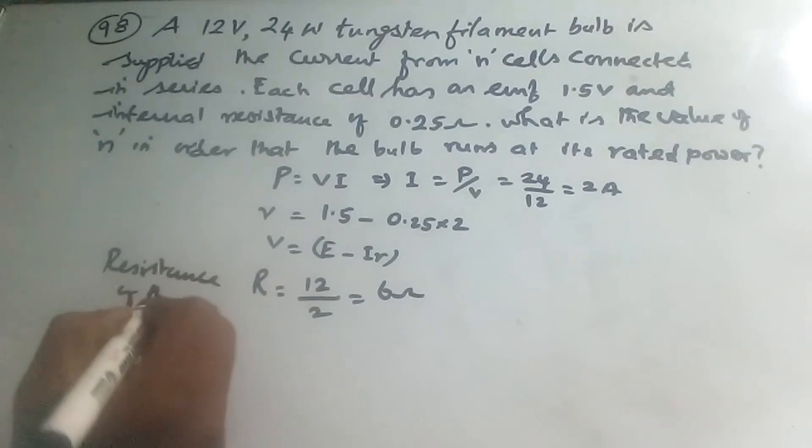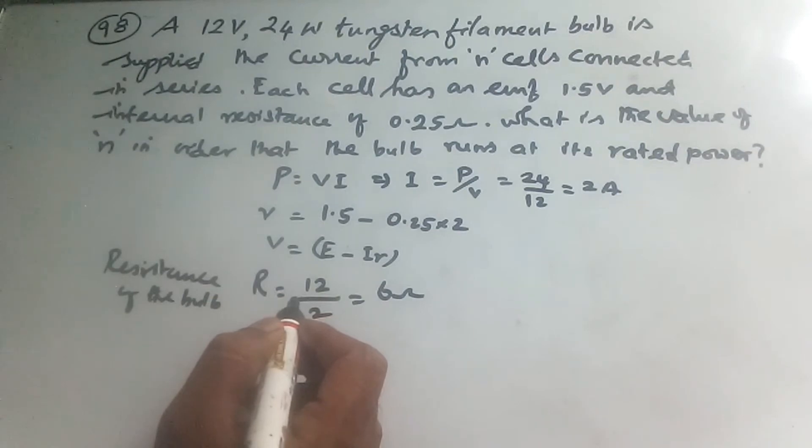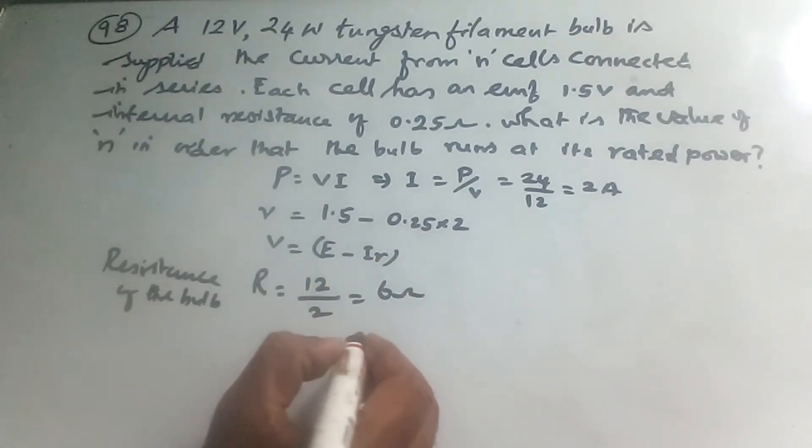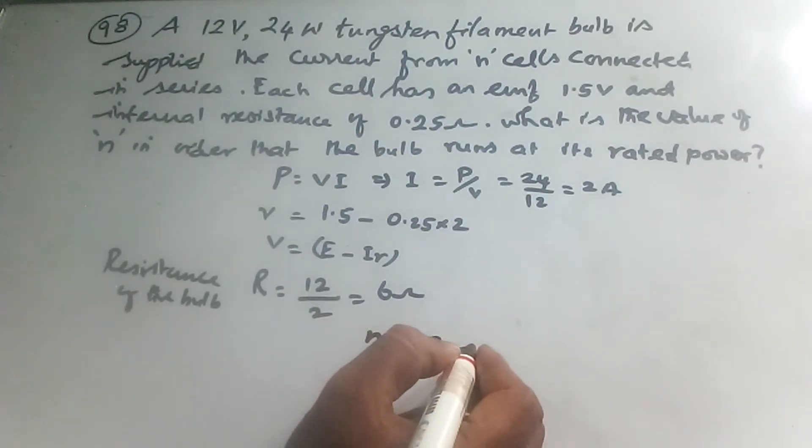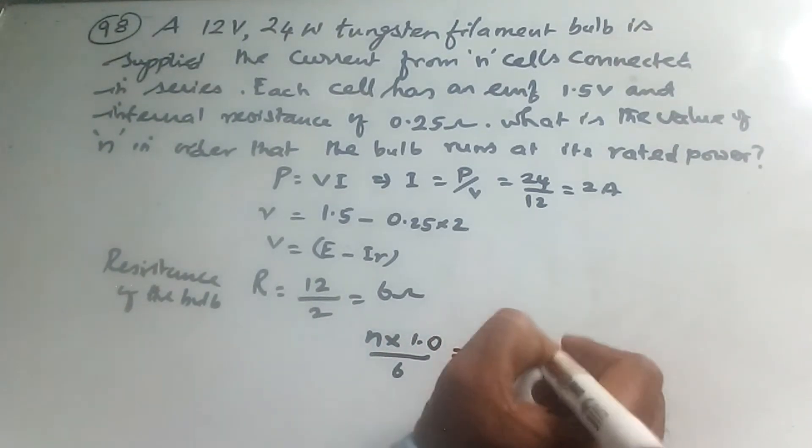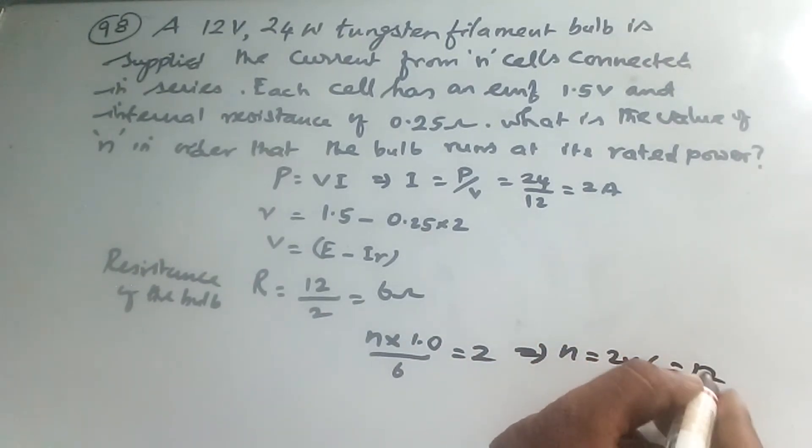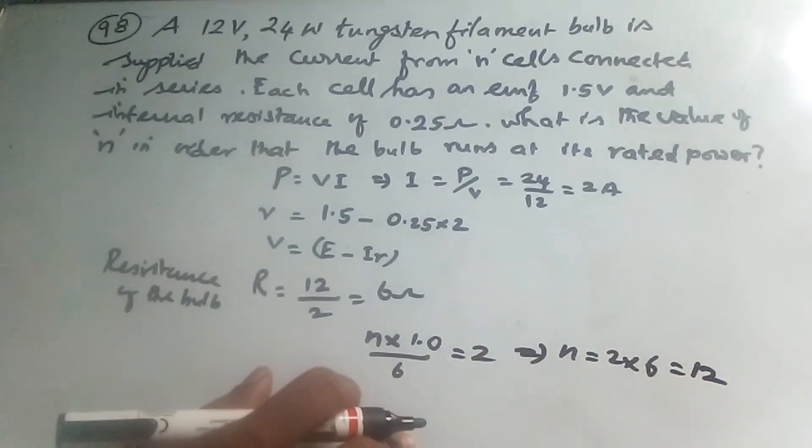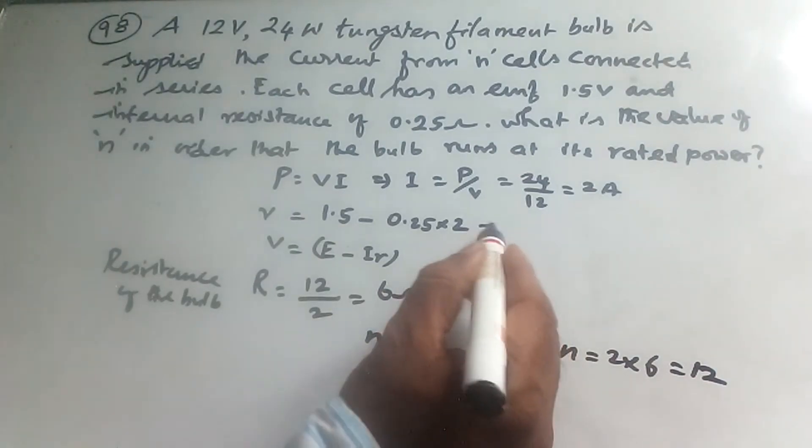So if n cells are used, the total voltage will be n × 1.0, which equals 12V. This gives n = 12. Because the terminal voltage is 1.5 - 0.25 × 2 = 1.5 - 0.5 = 1.0V per cell.